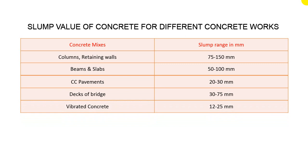For vibrated concrete — where our structure will undergo vibration — the slump value should be 12 to 25 millimeters. For example, a bridge or a structure where a machine will be placed that will always vibrate. In that case, our slump range will be 12 to 25 millimeters.